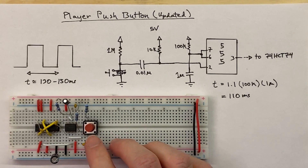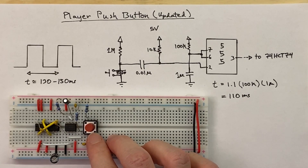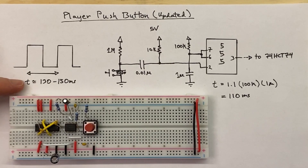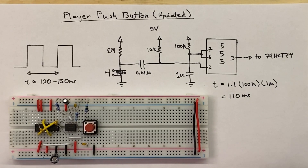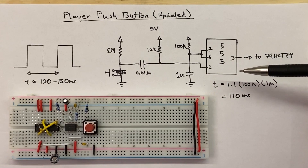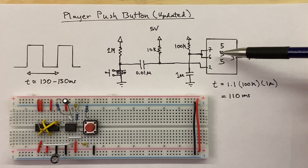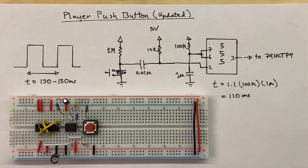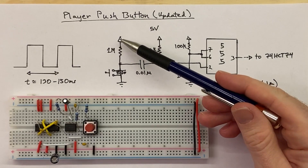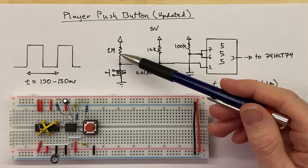We need to debounce the switch for a smaller amount of time than 130 milliseconds - otherwise if the player tries to push it twice quickly, the debouncer will block it. But we want to extend it as much as possible, so as high as we can while staying below that number. To the rescue is the 555 timer, in the same monostable configuration as before. Starting from 5 volts, we have a large megaohm resistor, a push button tied to ground, a capacitor, and a pull-up resistor forming the network feeding the trigger input at pin 2.